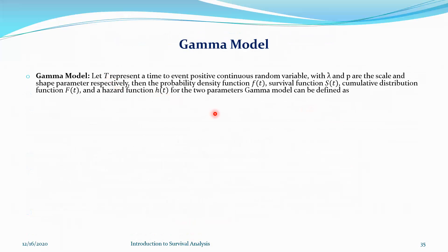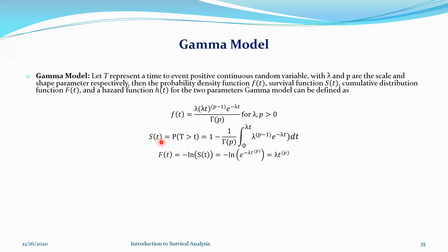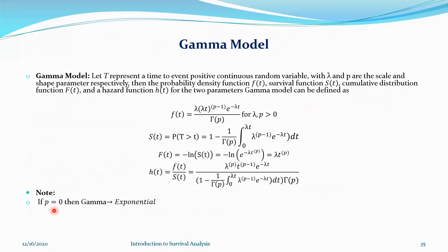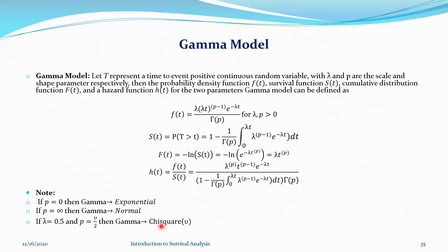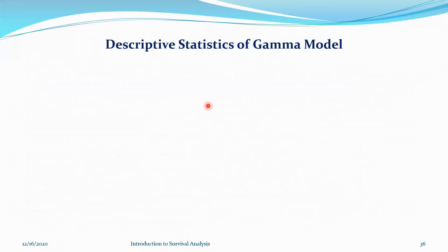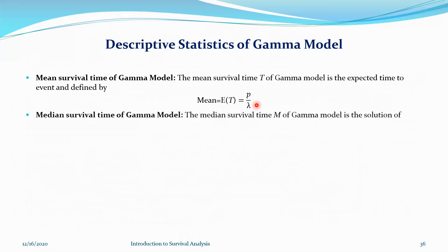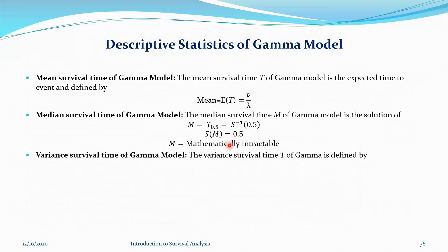Then we have another model, the gamma model. Time is a random variable; the different functions — PDF, survival function, distribution function, hazard rate — have specific expressions. Note that if you put p = 0 (or p = 1 for exponential equivalence), the gamma will be exponential. If p is infinity, gamma approaches the normal distribution. And if λ = 0.5 and p takes specific values, the gamma approaches a chi-square distribution with parameter ν. Some descriptive statistics: mean would be p/λ. The median is mathematically intractable — we cannot get it in closed form — but you can use numerical methods like Newton-Raphson to estimate the median. Variance has a specific expression.